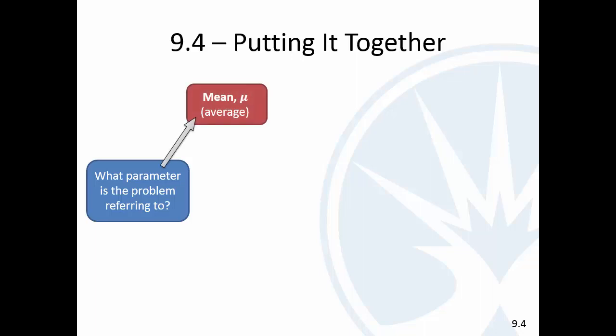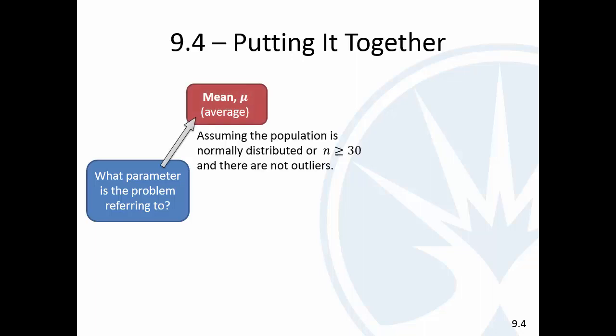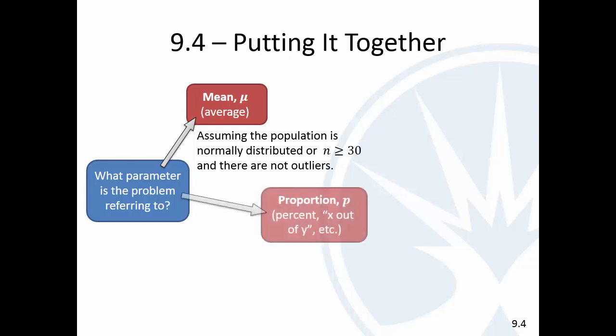We've got three parameters. It could be a mean, like an average. The conditions there are that the population has to be normally distributed, or the sample size has to be at least 30 with no outliers. We could be talking about a proportion, like a percent, or a fraction, or X out of Y — for example, 30 out of 200.